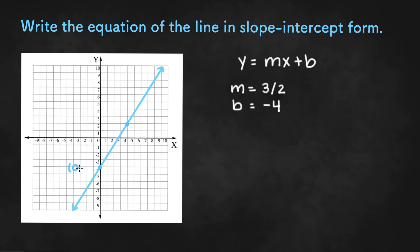So we have 0, negative 4, and 4, 2. Let's say this point is x1, y1, and this point is x2, y2. Now we can plug this in to the slope formula, which is y2 minus y1 over x2 minus x1.